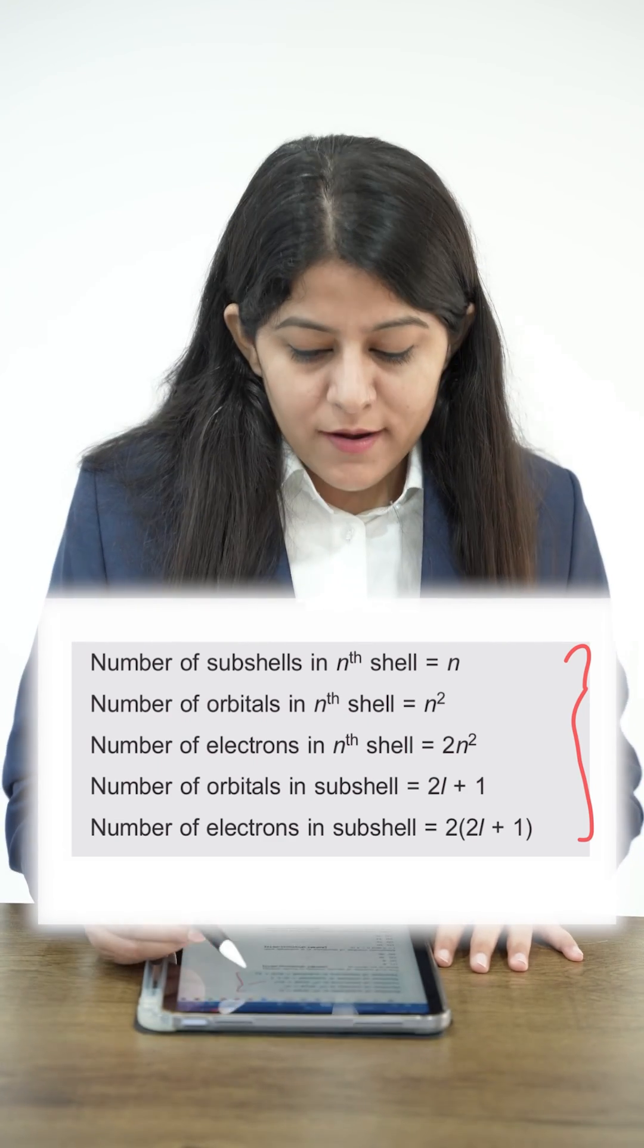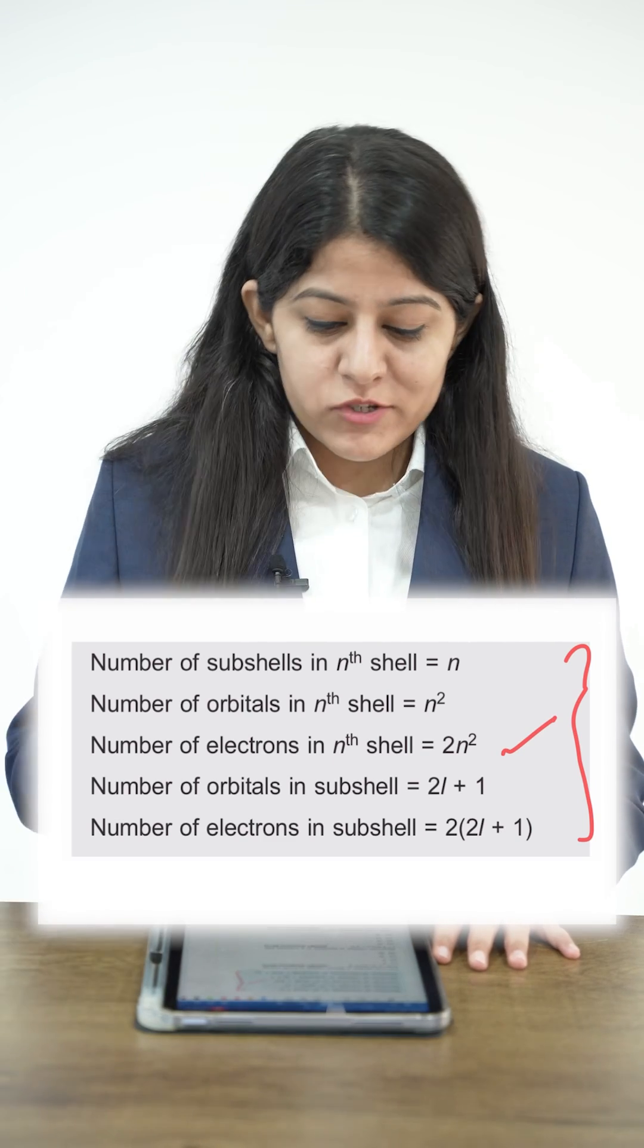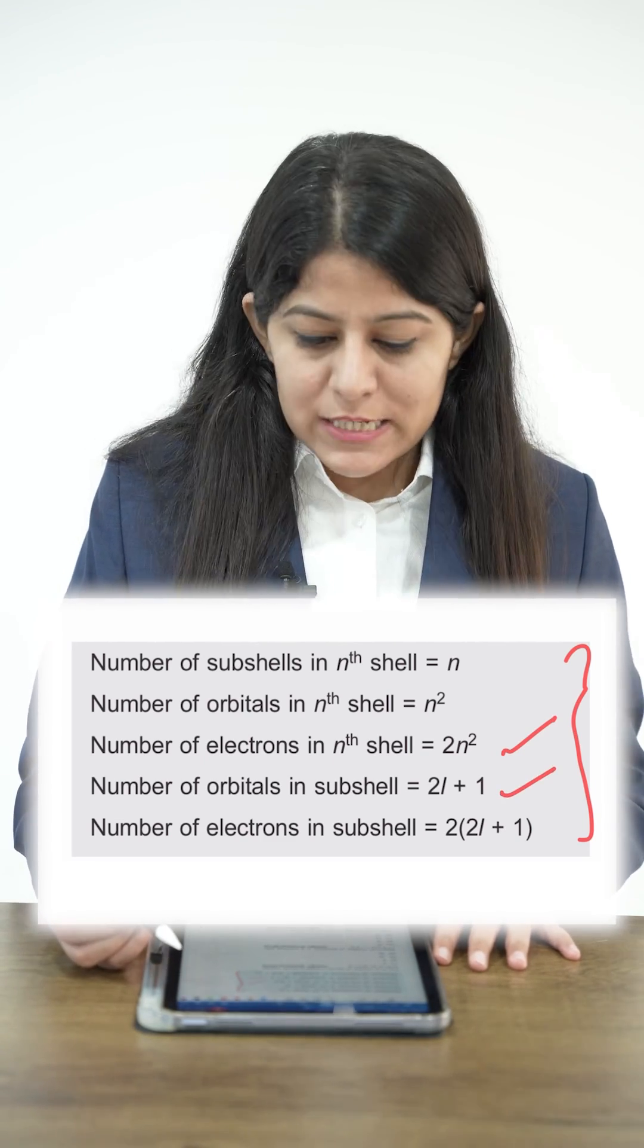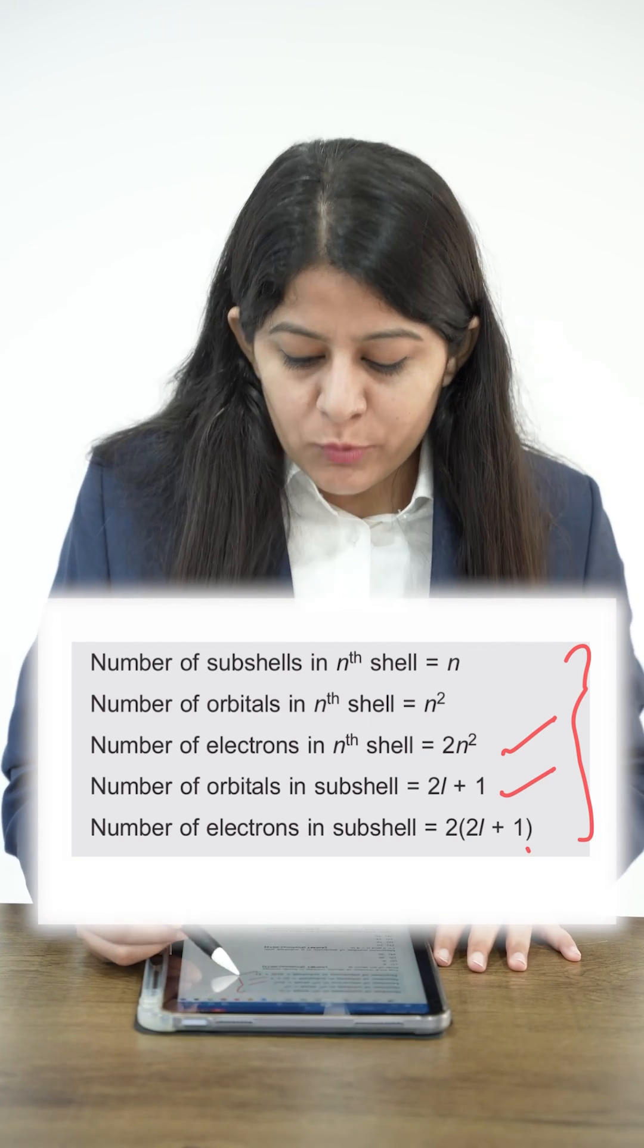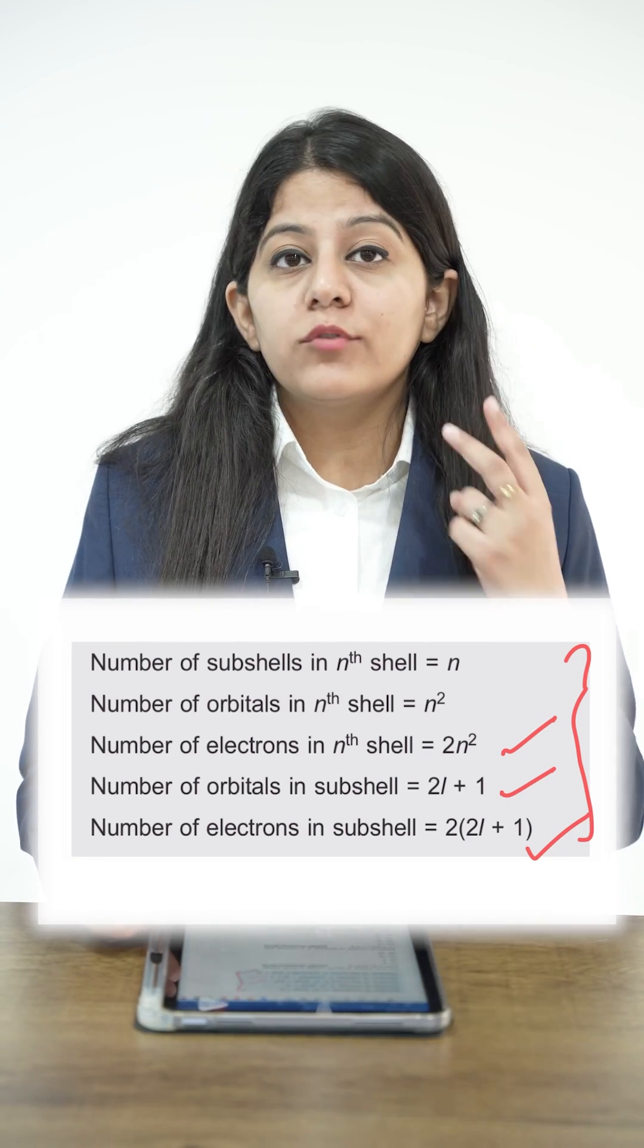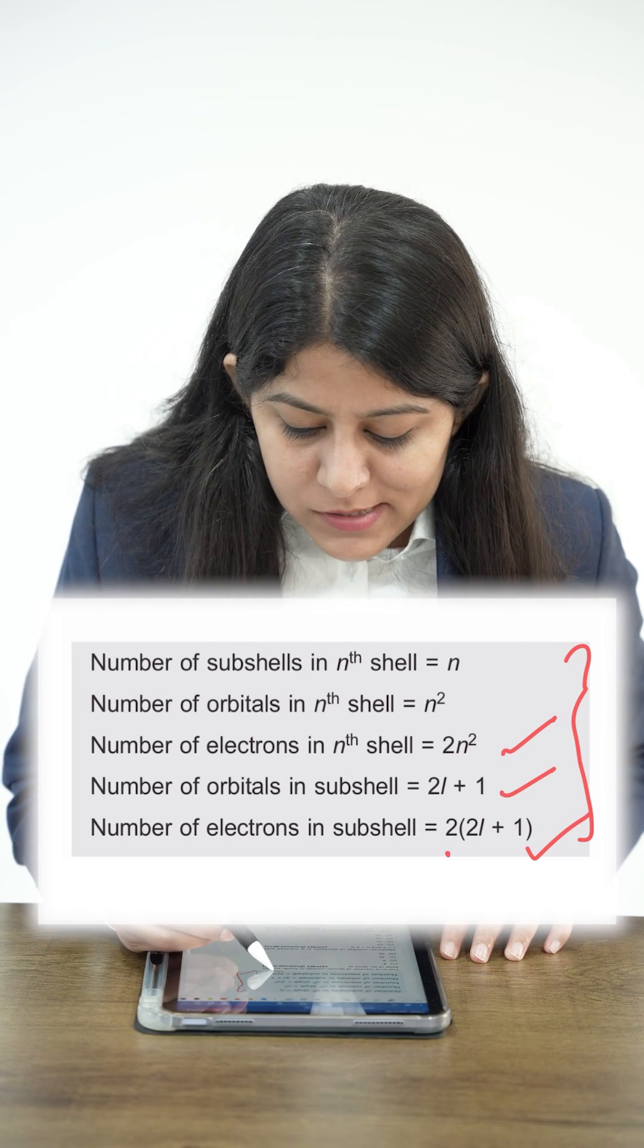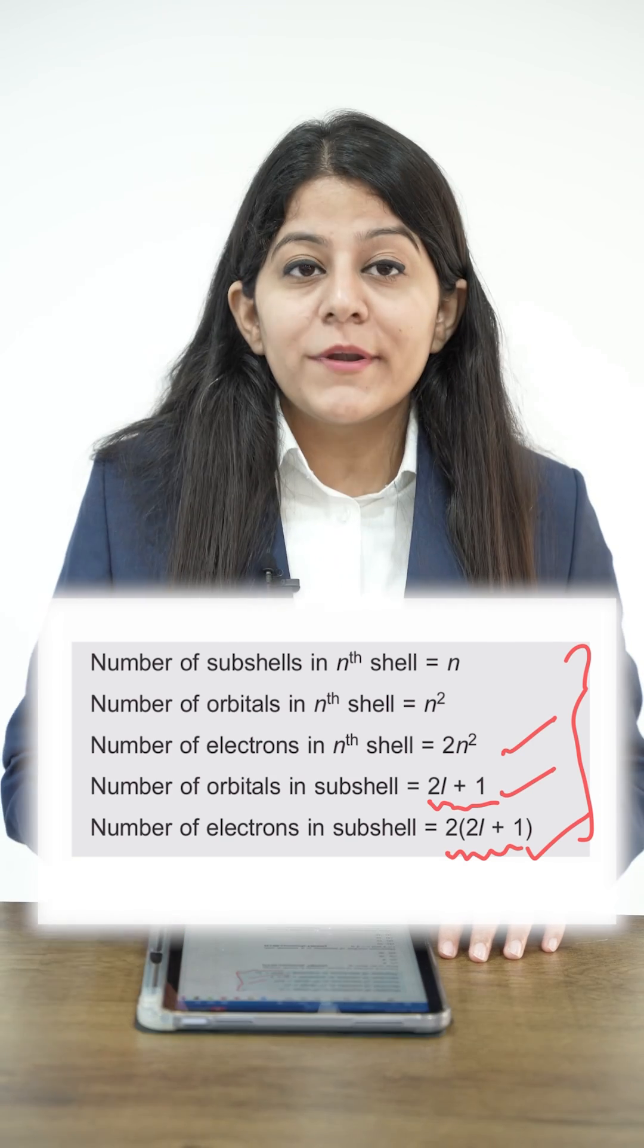Number of orbitals in a subshell is 2l+1, and number of electrons in the subshell is 2(2l+1). Since an orbital can have only 2 electrons, the electrons are double that of the orbitals. Orbitals are 2l+1, whereas electrons are 2×(2l+1).